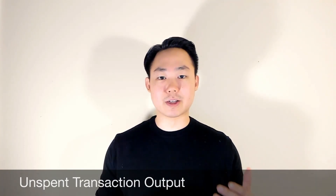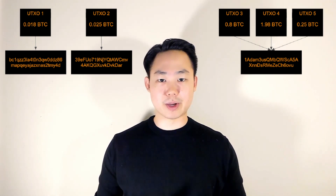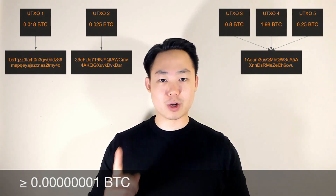Contrary to popular belief, Bitcoin is not a system of accounts and balances. Instead, the network keeps track of these things called UTXOs. A UTXO stands for unspent transaction output. A UTXO is simply an amount of Bitcoin that's assigned to a Bitcoin address, and it can be any amount of Bitcoin as long as it's at least one satoshi.